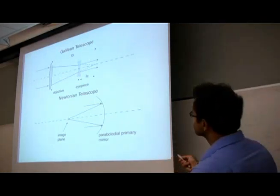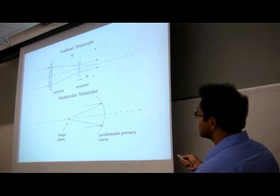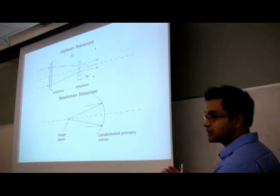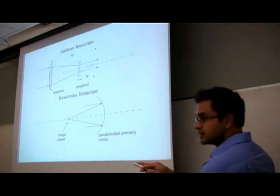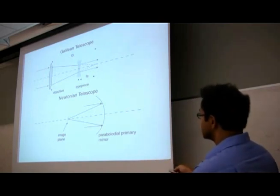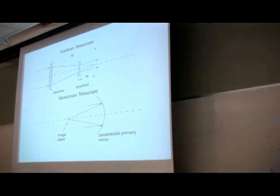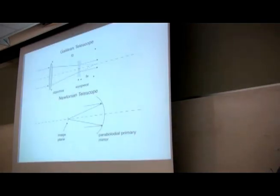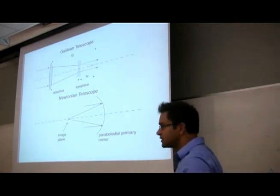There are a couple of telescope designs. The Galilean telescope has a positive objective lens and a negative eyepiece, which allows it to be more compact since the separation is f1 minus f2 rather than f1 plus f2. The Newtonian telescope uses a parabolic mirror to form an image of distant points at an image plane. That brings us to the end of our discussion on geometrical optics.